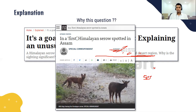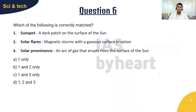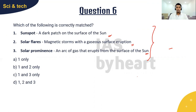This question was asked because an unusual sighting of the Serow was reported in Spiti for the first time in the Himalayan cold desert region, and it was also recently spotted in Assam — even though Assam is outside its usual habitat. This species was mentioned twice in the last two months, making it important from a UPSC perspective. The next question is from science and technology: which of the following is correctly matched — sunspot, solar flares, and solar prominence with their definitions?